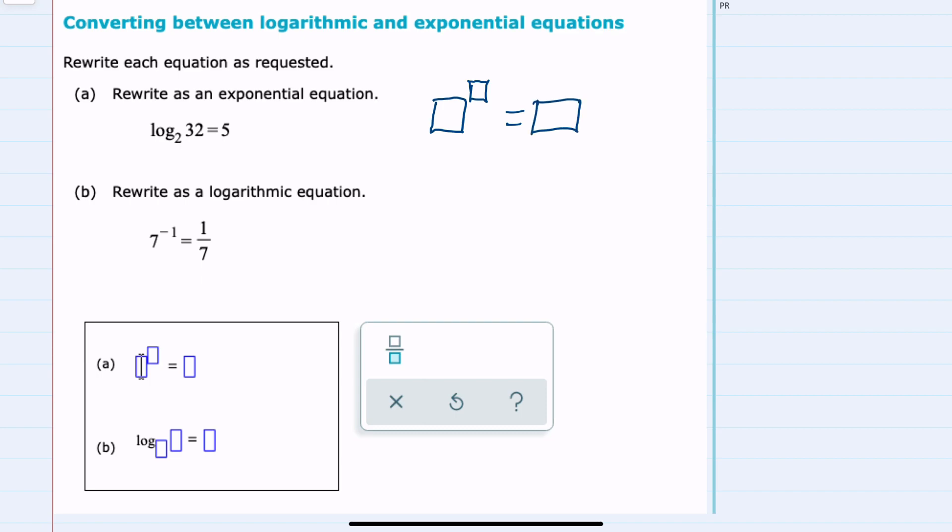And to make this translation, we should recall that the base of the logarithm will be the base that is raised to an exponent. What the logarithm is equal to is the exponent, here 5, and what you are taking the logarithm of will be the exponential equation once calculated. So 2 to the 5th equals 32 is another way of writing log base 2 of 32 equals 5.